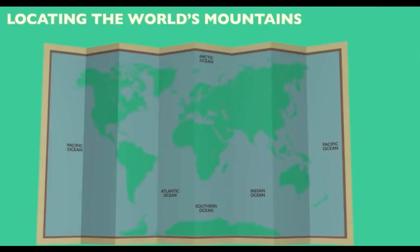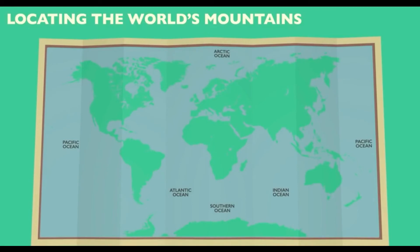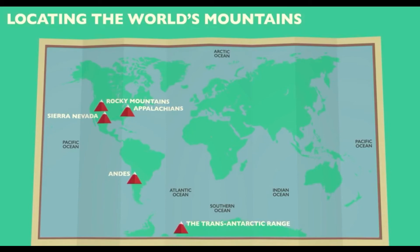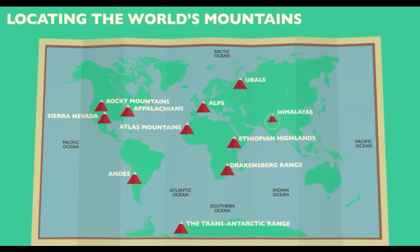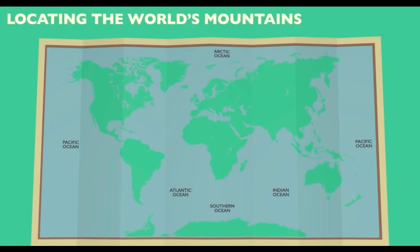Let's look at the number of mountains we have across the world. We have the Rocky Mountains, Sierra Nevada, the Appalachian Mountains, the Andes, the Trans-Antarctic Range, the Atlas Mountains, the Ethiopian Highlands, the Drakensberg in South Africa, the Alps in Europe, the Urals, the Himalayas in India, the Zagros Mountains, and the Great Dividing Range in Australia.